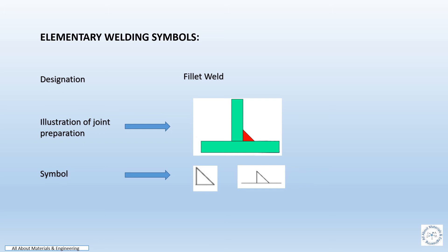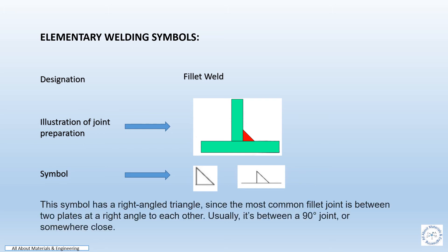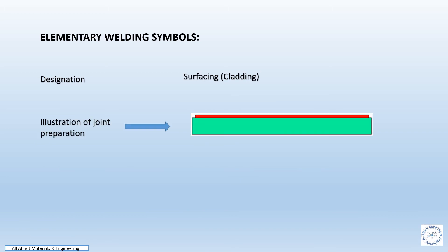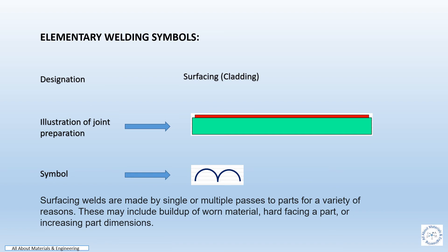Elementary welding symbols for fillet weld. The sketch shows the illustration of joint preparation and the symbols represented in the drawing. This symbol has a right-angle triangle, since the most common fillet joint is between two plates at a right angle to each other — usually a 90 degree joint or somewhere close to it. Elementary welding symbols for surfacing or cladding: the sketch represents the joint illustration for joint preparation and the symbols to be represented in the drawing.